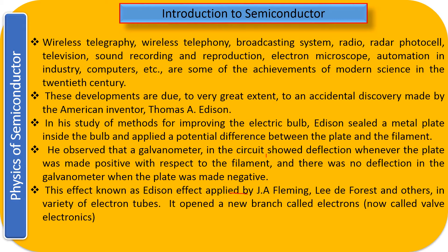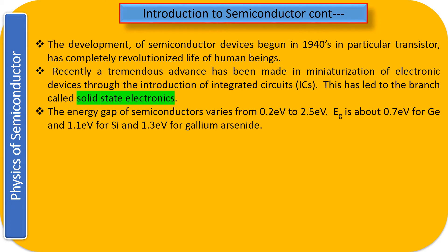This effect was used by many scientists, some of them being J.A. Fleming and Lee de Forest, in a variety of electron tubes. Many types of electron tubes were invented, and that is the beginning of electronics. This principle, given by Thomas Elva Edison, was used to make the electron tube, which was the first step for all audio broadcasting, television broadcasting, telegraphy, and opened a new branch called electronics.